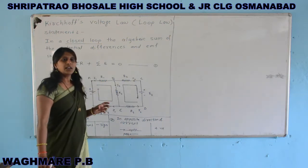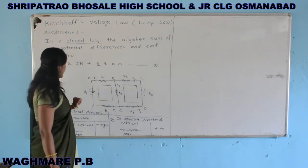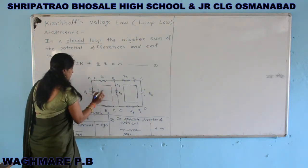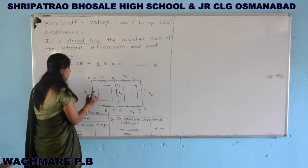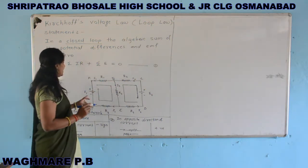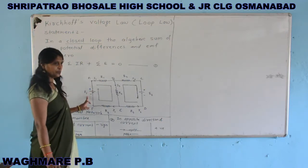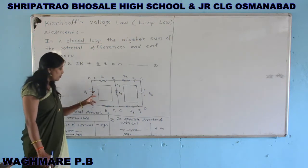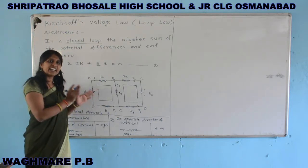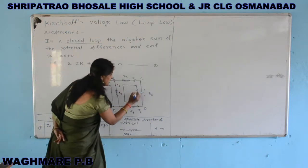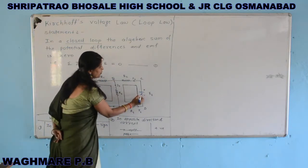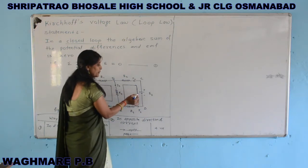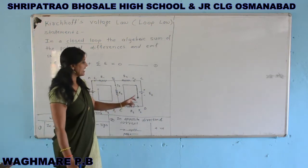Now the sign convention for EMF in the circuit. When we traverse from the negative terminal to the positive terminal inside the cell — that is, from low potential to high potential — the EMF is taken as positive. When we traverse from the positive terminal to the negative terminal — high potential to low potential — the EMF is taken as negative.